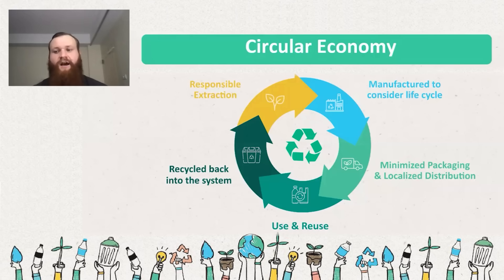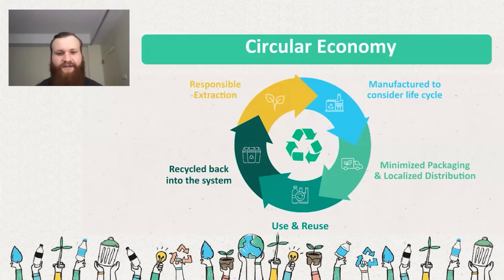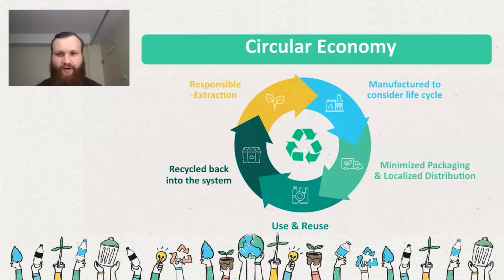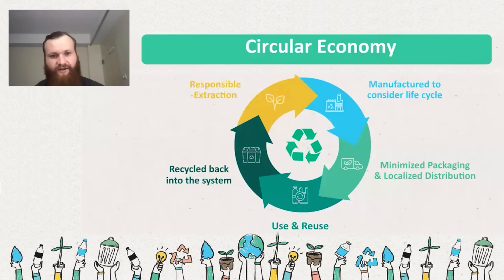Manufacturing to consider life cycle. Unlike linear economies where you're just manufacturing to sell the product, in a circular economy you're thinking about the end case of what's going to happen with your product. For example, if you're manufacturing a plastic bottle, you put recycling symbols on it so that at the end of its life there's a way for it to circulate and reenter the economy. If you're not concerned with that, you just put your product out. Manufacturing to consider a life cycle means thinking about all of its steps, including extraction and recycling — what happens after the product's done being used for its first purpose.